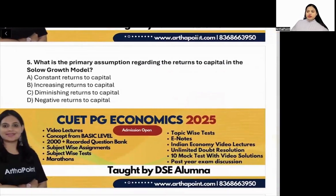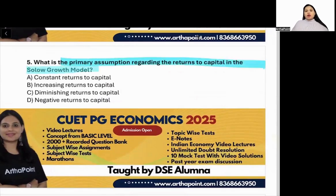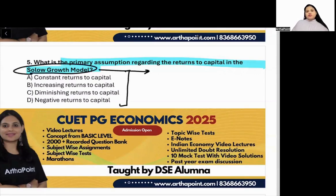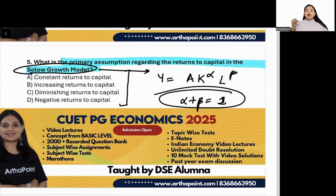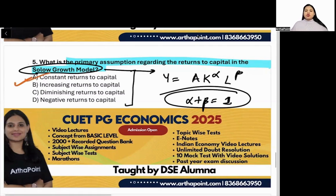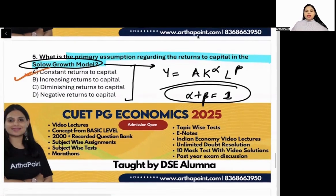Next question: what is the primary assumption regarding returns to capital in the Solow model? When we talk about the Solow model, we work with a production function Y = A · K^α · L^β, where alpha plus beta equals 1. This means we have constant returns to scale.